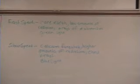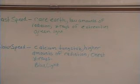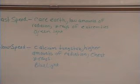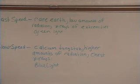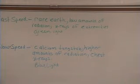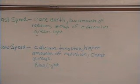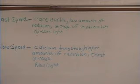Fast speed film is also called rare earth. It requires low amounts of radiation, so you don't have to use quite as much radiation with this type of film. This is the kind of film used for x-rays of the extremities — for example, the wrist, hand, fingers, and feet. Inside the x-ray cassette, you get a green light that shines whenever you take the x-ray, which is why I wrote it in green — because the film is sensitive to green light.